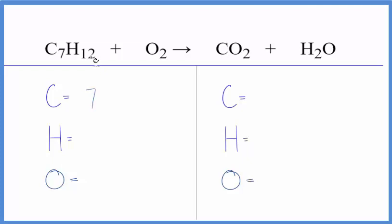7 carbons, 12 hydrogens, and 2 oxygen atoms. On the product side, 1 carbon, 2 hydrogens, and 2 oxygens. But be careful, people often forget this oxygen in the water. So we actually have 3 oxygen atoms on the product side of the equation.